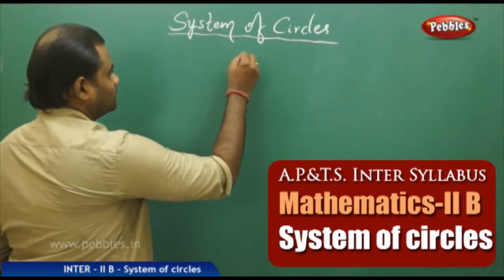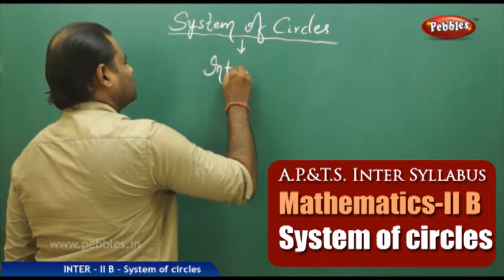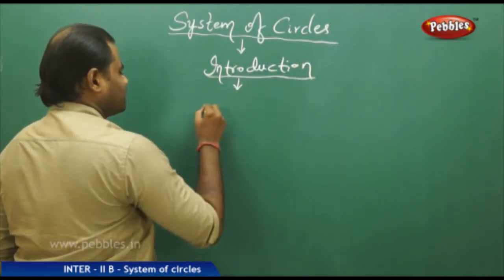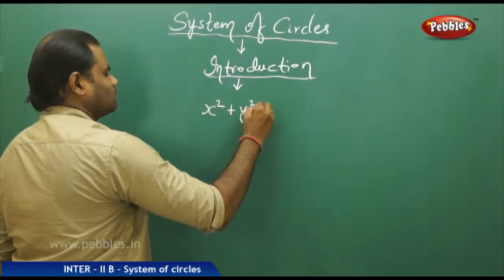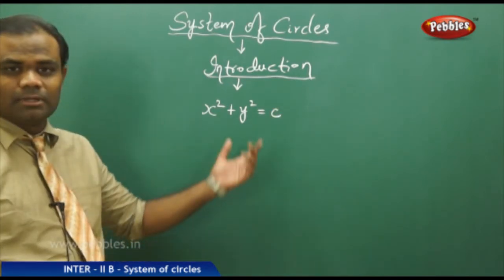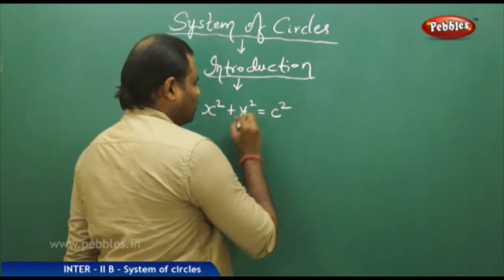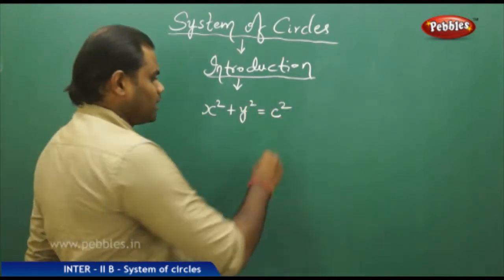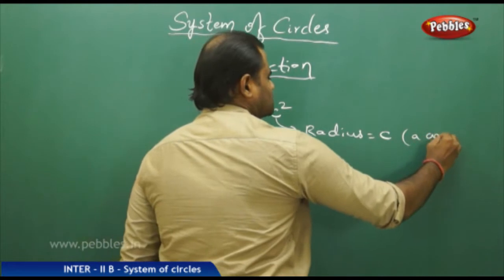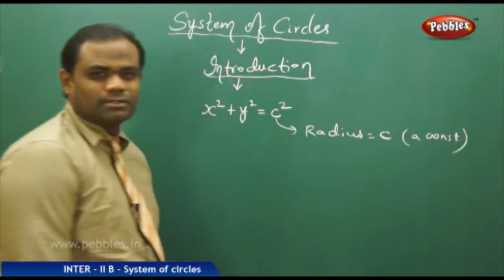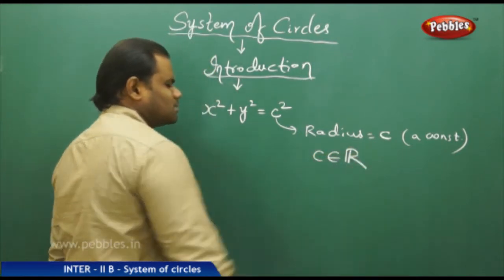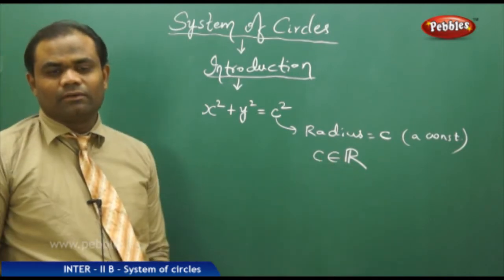For example, if we have an equation equal to C, this is similar to x squared plus y squared equal to r squared. If we assume the radius to be C, a constant, then we get a system of circles. That is, if I take C with different values — if C belongs to all real numbers, for every C belonging to the real numbers we get a different circle.